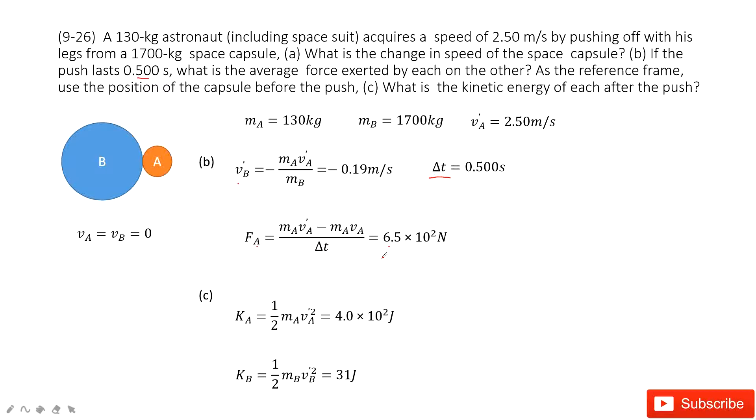The third one asks you to find the kinetic energy for each object after the push. The kinetic energy for A is one-half m_A v_A final squared. The kinetic energy for B is one-half m_B v_B final squared, where v_B final is the final velocity for object B. Thank you.